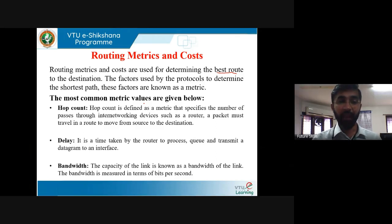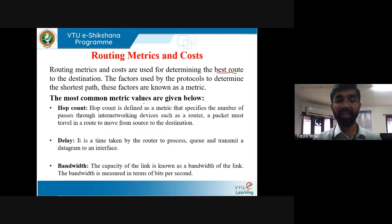Next is delay. Delay, or latency, is the time taken by the router to process, queue, and transmit a datagram to an interface. The processor must read the information present in the packet and process it to find the control information and the next route to reach the destination. If the link is busy, the packet has to wait in a queue, which is also considered as delay.